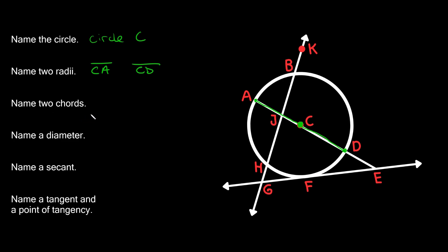Now here it says name two chords. So a chord is just a segment whose endpoints are on the circle. So as you can see here, we have this line right here from B to H, that's a chord, because it's a line where the endpoints are on the circle. So we can say segment BH is a chord.